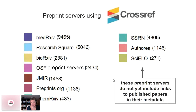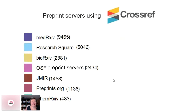There are no links to published papers in those servers, so that leaves the remaining ones. I collected preprints that declared themselves to be preprints — those with the publication type 'preprint' in Crossref, or the resource type 'preprint' in DataCite. Of course, we can argue about some of these servers and whether they are truly preprint servers, but they are used as such, so I included them in my analysis.